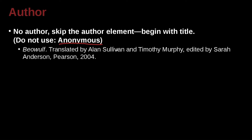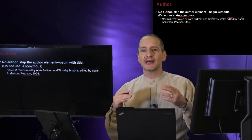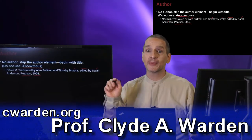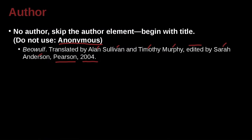Then we say: translated by Alan Sullivan and Timothy Murphy. First name first, last name last — they are not the author, they are translators. Then we have an editor: edited by Sarah Anderson, comma. Pearson is the publisher, comma. And 2004 is the publication date of this version. There could be other people who translated the book — the book is written anonymously. But in this case, we say this version is from Pearson and it came out in 2004. That's very clear to help someone find it.